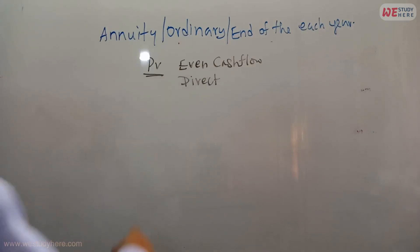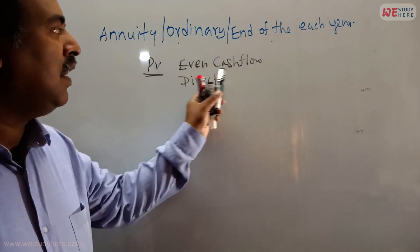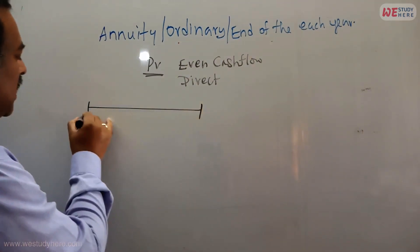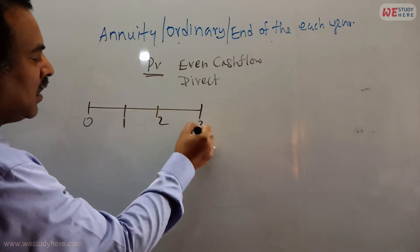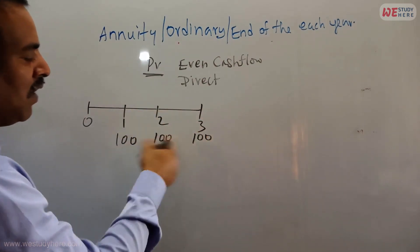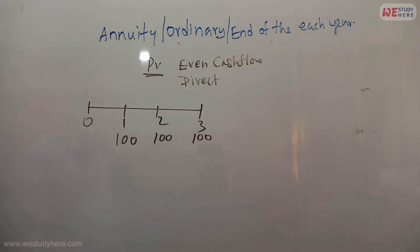Okay, now I want to find out the present value using direct method, but what kind of cash flow? Even cash flow. Even cash flow basically: year zero, year one, year two, year three, we have 100, 100, 100. This is called even cash flow because same amount every year.